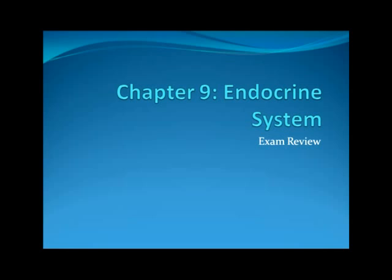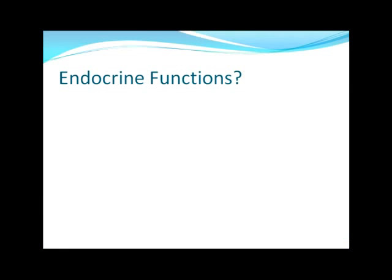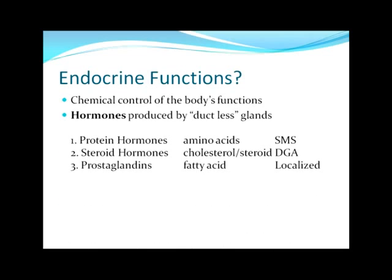I'm going to do a review of chapter 9, the endocrine system. The endocrine functions are basically a control mechanism that controls all the different functions of the human body. It does this by way of hormones. Hormones are produced by ductless glands, meaning they're not secreted to an apical surface or hollow organ — hormones are actually secreted into the bloodstream and travel throughout the body.